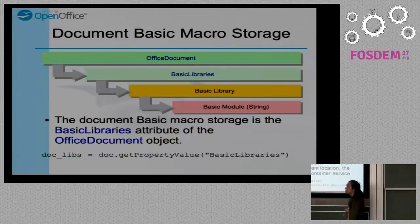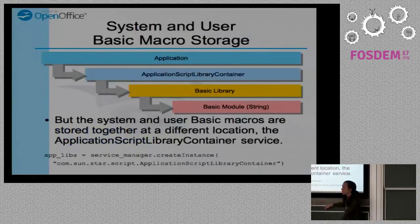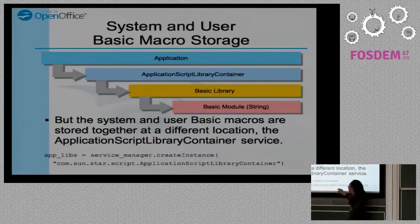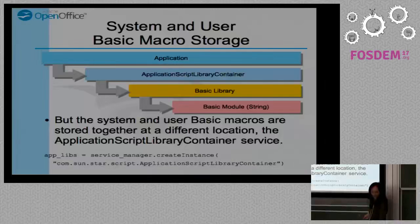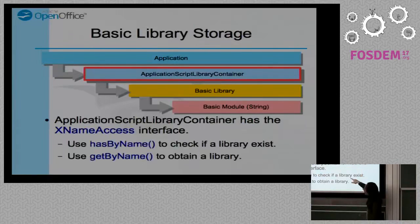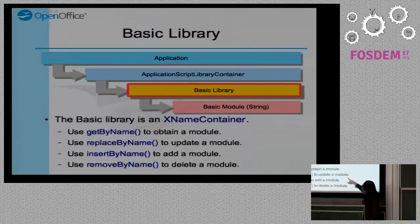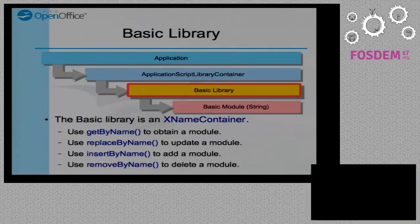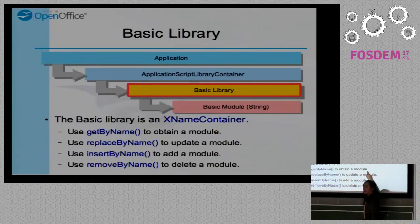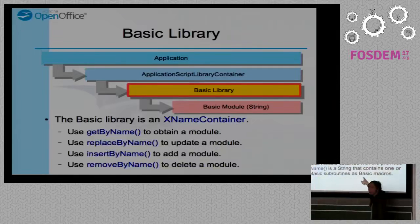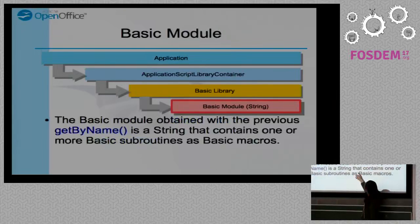Now I'm working on the system storage. For system and user Basic macro storage, they are stored in a different location — the Application Script Library Container Service — and I can use the Service Manager to create it. The code shown here is Python. This container has the XNameAccess interface, so I can use hasByName or getByName to test and obtain a Basic library.